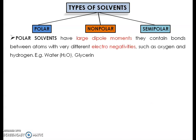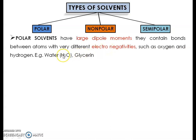First, we will discuss polar solvents. What is meant by polar solvents? Polar solvents have a large dipole moment. They contain bonds between atoms with very different electronegativities, such as oxygen and hydrogen. For example, water and glycerin. In water, hydrogen and oxygen have very different electronegativities — oxygen has a strong negative charge and hydrogen has a strong positive charge. The capacity of a polar solvent to dissolve something depends upon its dipole moment, which is the charge on the atoms in that particular structure.